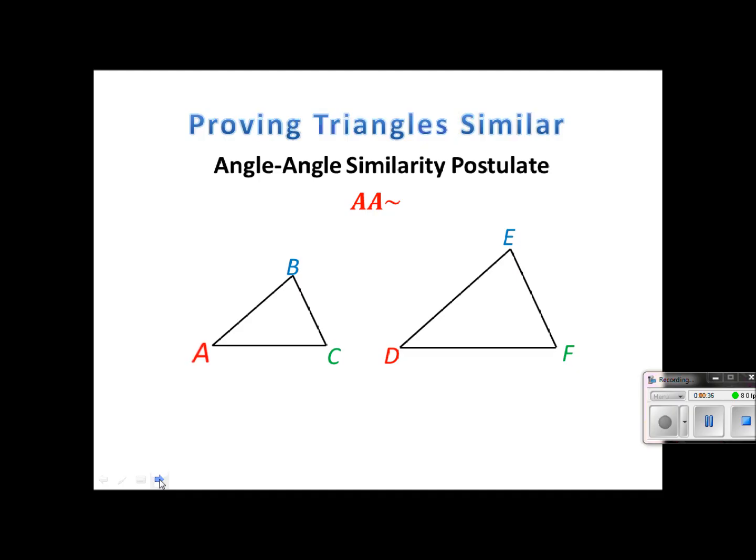All we have to do is show that we have two sets of corresponding angles that are congruent. So if A is congruent to D and B is congruent to E, then that's enough to prove that these triangles are similar.